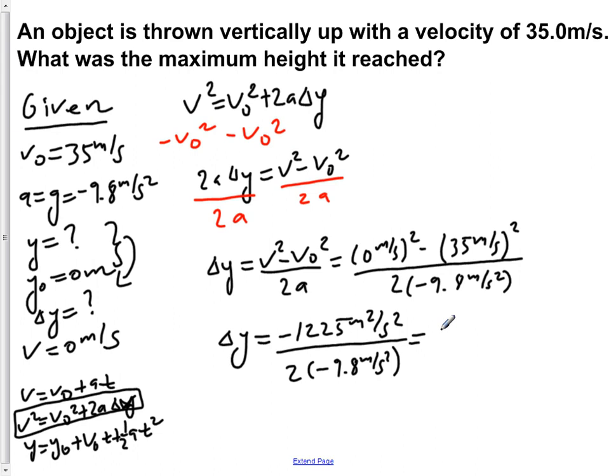We would find that our maximum height thrown up with initial velocity 35 meters per second would be 62.5 meters. So delta y is 62.5 meters, which is the maximum height that we're going to reach.